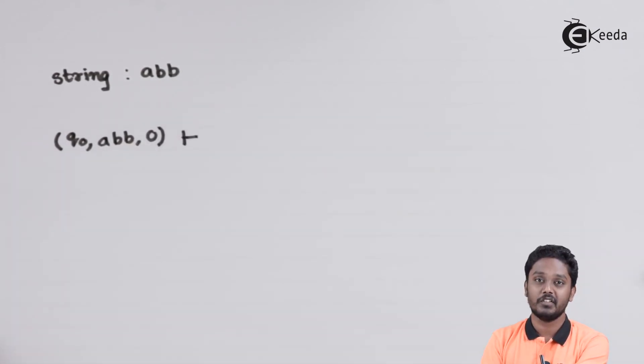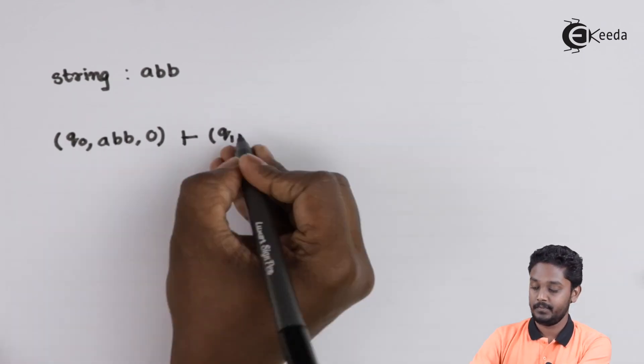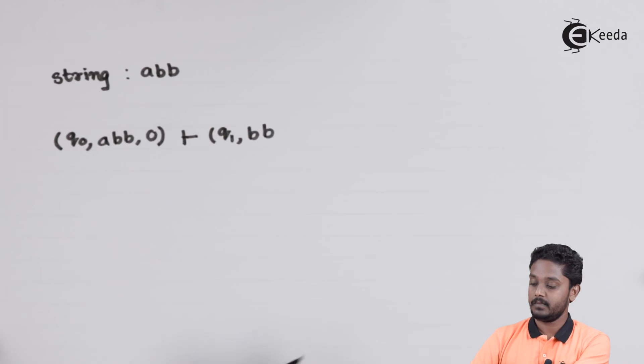We need to do the first transition. From Q0, on A with 0, we will have a transition to Q1. String to be left is BB. Top of the stack would be now 10.